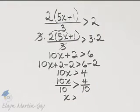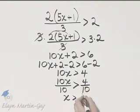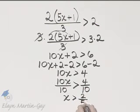Now this will simplify. There's a common factor of 2 in 4 and 10. 4 divided by 2 is 2. 10 divided by 2 is 5. So x greater than 2 fifths.